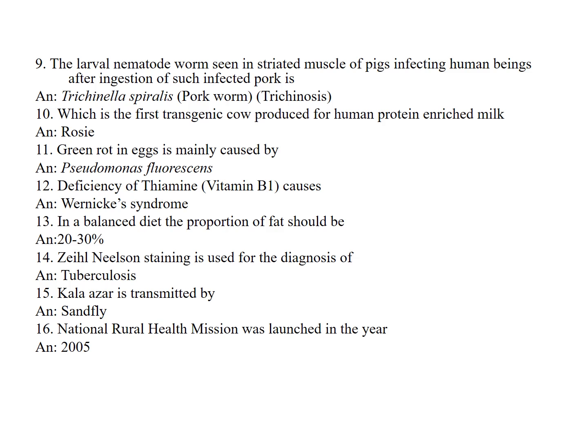The first transgenic cow produced for human protein-enriched milk is Rosie. Green rot in eggs is mainly caused by Pseudomonas fluorescens.